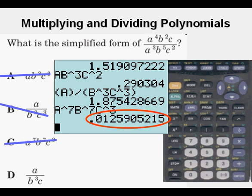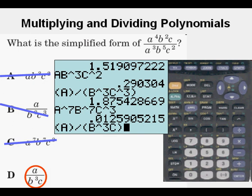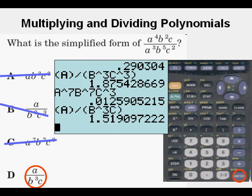Now we expect choice D to be the right answer. Again, we enter the numerator and denominator of this expression in parentheses and press enter. And we get the same thing, 1.52. And so that is going to be our correct answer. We circle that as correct.